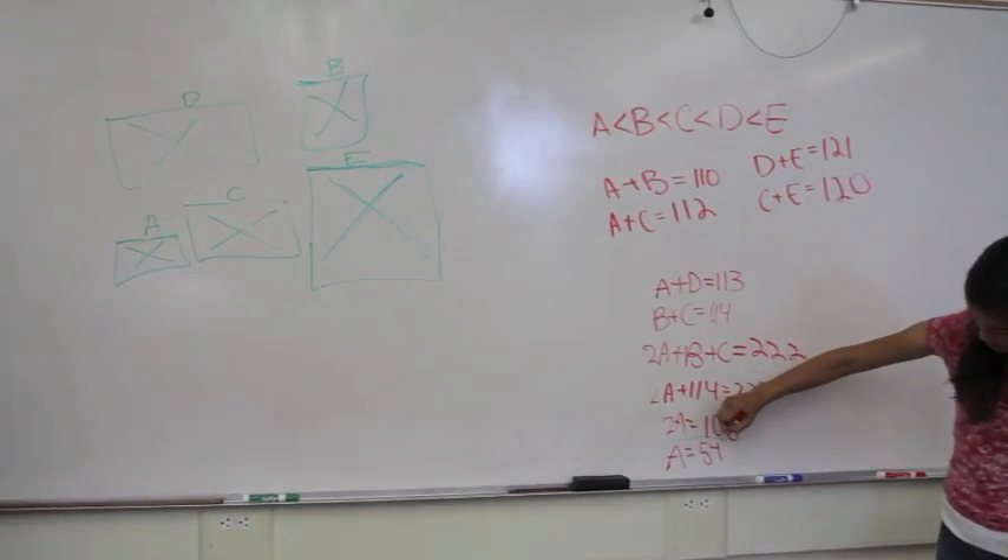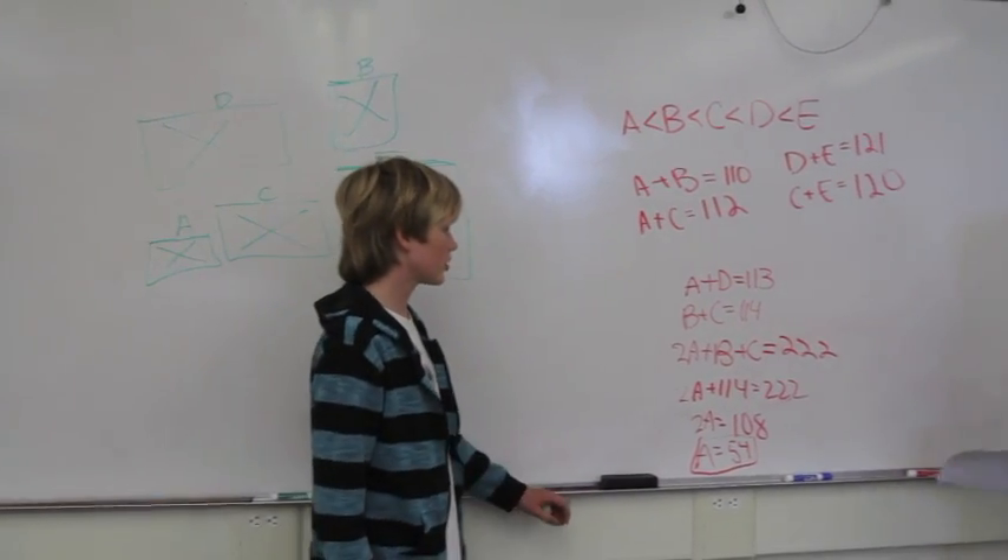So we know that the weight of the first box is 54, but now it's time to find the weight of the other boxes. So what we're going to do is get A plus B and get 110, which is the sum, and subtract A from both sides. We can do the same thing with C.